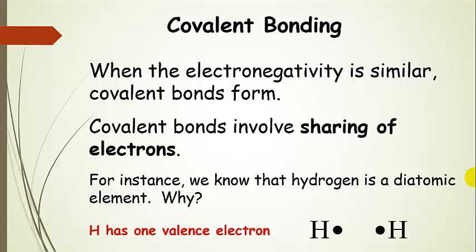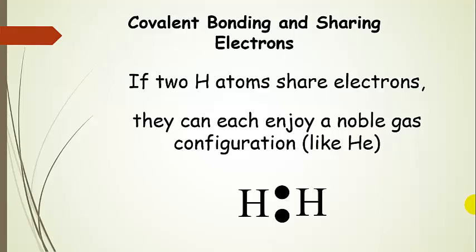When the electronegativity is similar, covalent bonds form, and covalent bonds involve sharing of electrons. We know that hydrogen is a diatomic element, so we don't find just hydrogen atoms hanging out by themselves — it's H₂. These two hydrogens basically share their two electrons, and each can attain a noble gas configuration like helium. Each of these hydrogens owns one electron. If they get together and share, then they can both enjoy a noble gas configuration just like helium — that would be 1s². That's why hydrogen comes as a diatomic molecule as opposed to separate hydrogen atoms.